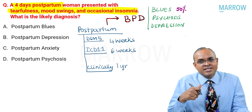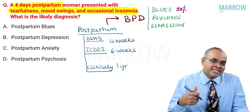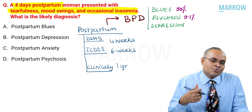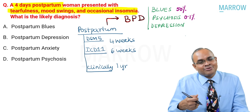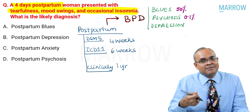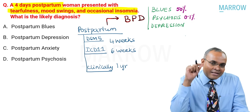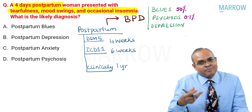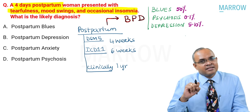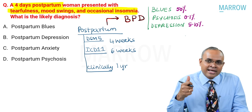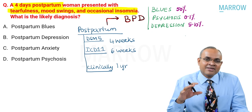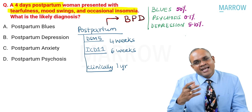Postpartum blues or baby blues occur in about 50% of pregnancies and are quite benign and self-limiting. Psychosis happens in only about 0.1% — one in a thousand pregnancies — but it can be very severe, life-threatening, and may involve extended suicide where the infant is also at risk. Depression occurs in about 5 to 15% of pregnancies. For postpartum blues, you reassure the patient, teach relaxation techniques, and they generally improve.